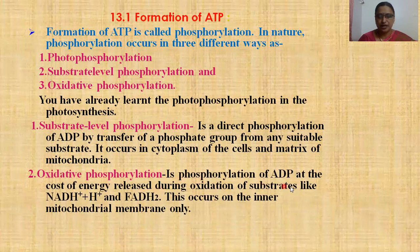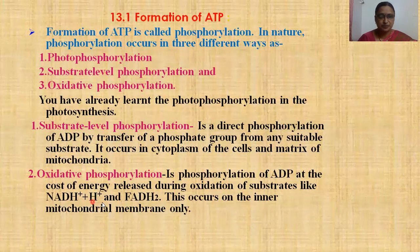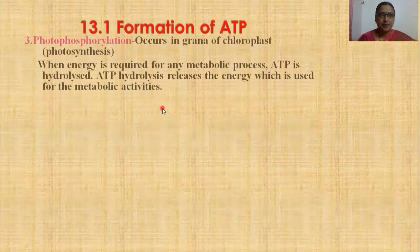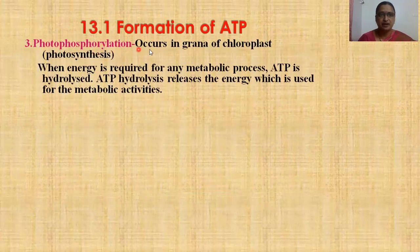Oxidative phosphorylation is a phosphorylation of ADP at the cost of energy released during oxidation of substrates like NADH+H+ and FADH2. Oxidative phosphorylation occurs in the inner mitochondrial membrane only. Photophosphorylation occurs in the grana of chloroplasts during photosynthesis.